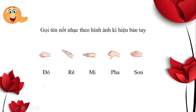Kính thưa quý thầy cô, vừa rồi các thầy cô đã được xem một vài trò chơi trong dạy học bộ môn âm nhạc bậc Tiểu học. Trò chơi tạo sự hứng thú học tập cho học sinh, nhưng vẫn phải đảm bảo nội dung chương trình. Với đối tượng học sinh lớp 1, kết thúc năm học là các em đã nắm được tên gọi 5 nốt nhạc và ký hiệu bàn tay của những nốt đó.